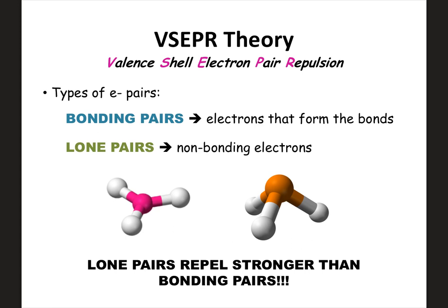Lone pairs repel stronger than bonding pairs. If you look at these two pictures, each has a center atom with three things attached. The one on the left is nice and flat, but the one on the right has a bent-down shape — it kind of looks like a little alien spaceship. This is because one of them has lone pairs on the center atom and the other doesn't. Having those lone pairs causes the atoms to bend — the electrons in the bonds try to get away from the lone pair.